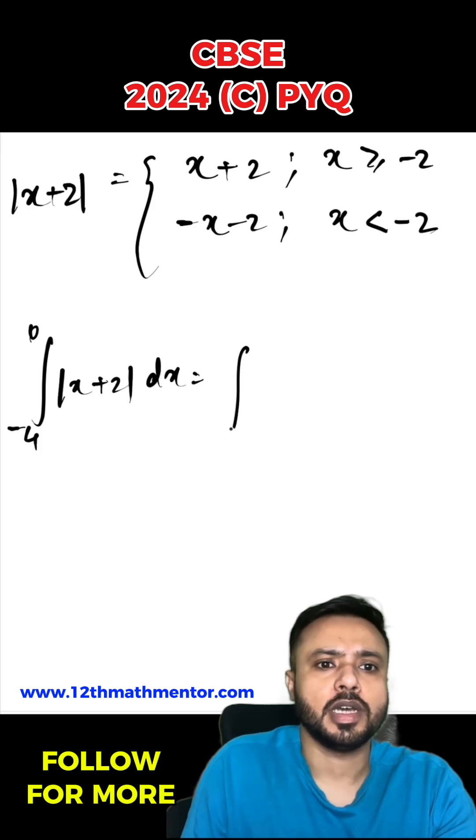I can write it as negative 4 to negative 2. Negative 4 to negative 2 is x less than negative 2, so in this the value of mod of x plus 2 is negative x negative 2 dx.